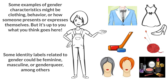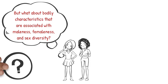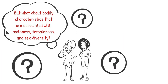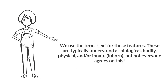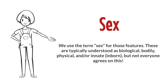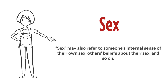Some identity labels related to gender could be feminine, masculine, or genderqueer, among others. But what about bodily characteristics that are associated with maleness, femaleness, and sex diversity? We use the term sex for those features. These are typically understood as biological, bodily, physical, and or innate inborn, but not everyone agrees on this. Sex may also refer to someone's internal sense of their own sex, others' beliefs about their sex, and so on.